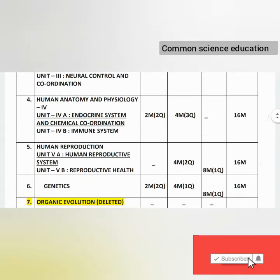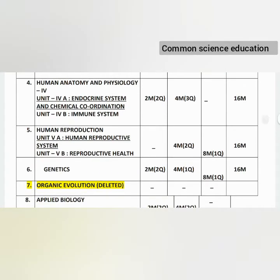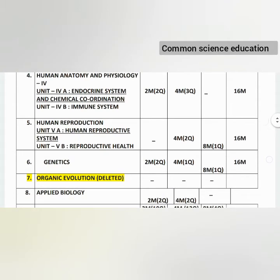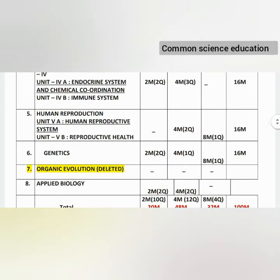Unit 5 Reproduction includes very short answer questions, 4-mark questions (2 questions), and one 8-mark question, totaling 16 marks for this unit.